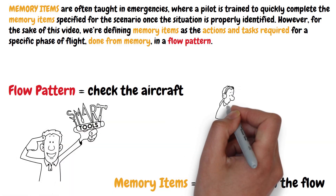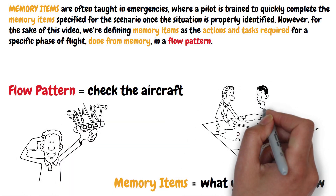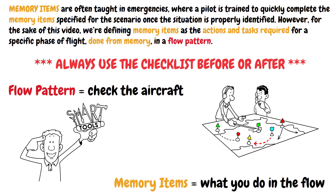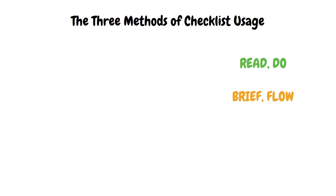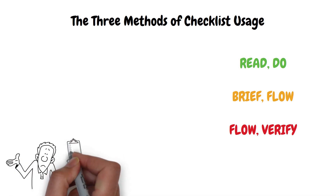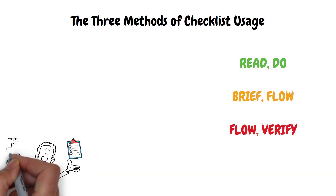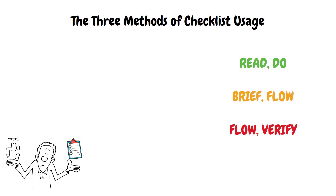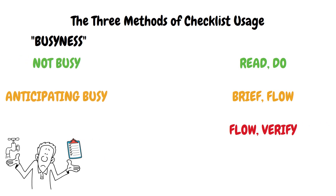Whether you use a checklist as a do list or in a flow pattern, you must read the checklist before or after to confirm that critical items are or have been completed. Now, the three methods of using checklists are the read-do method, the brief-flow method, and the flow-verify method. Before I explain how each method works, you need to know why certain phases of flight require different checklist methods — it depends entirely on busyness. There are three levels of busyness: not busy, anticipating being busy, and busy.